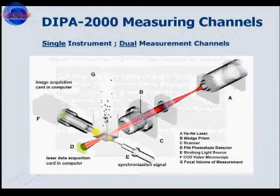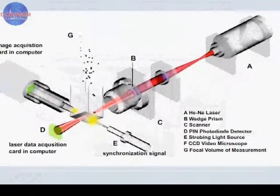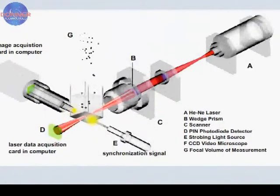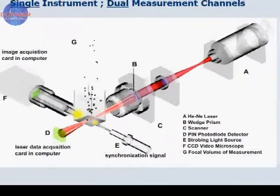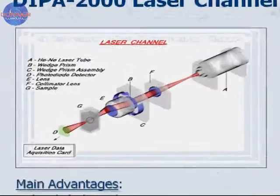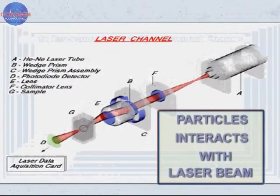The main function of the DIPA2000 laser channel is to accurately determine particle size distribution by analyzing the interaction of the focused laser beam with the particle in the sample.